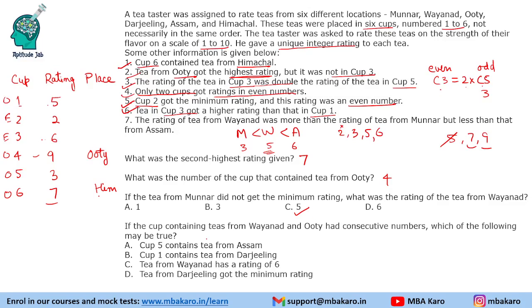The last question says: if the cups containing tea from Vyanard and Uti had consecutive numbers, which of the following may be true? Uti is in cup 4, so Vyanard can be in cup 3 or cup 5. If Vyanard is in cup 3, Vyanard gets rating 6. But this is not possible because Assam must be greater than Vyanard and there is no other value greater than 6 available.